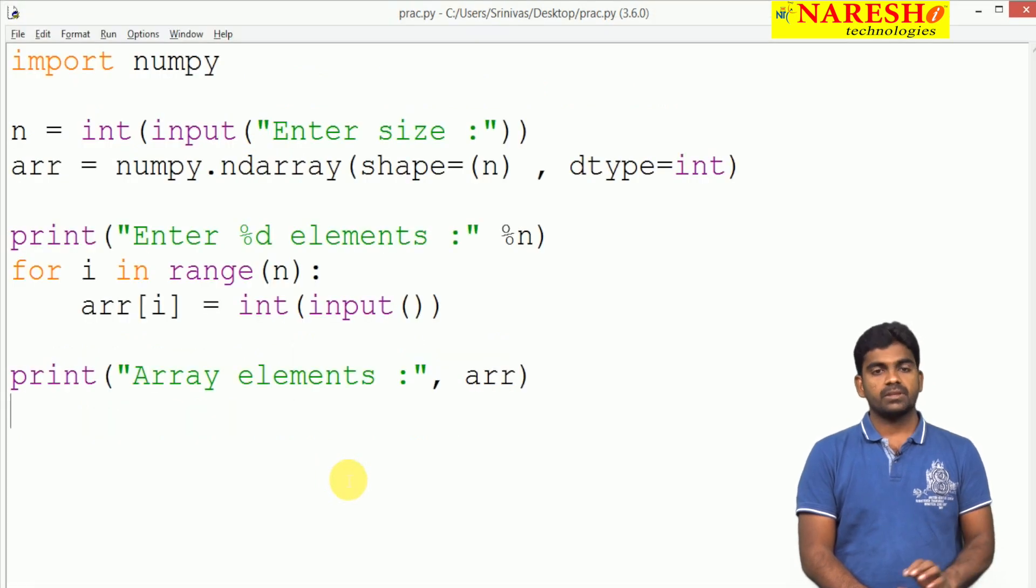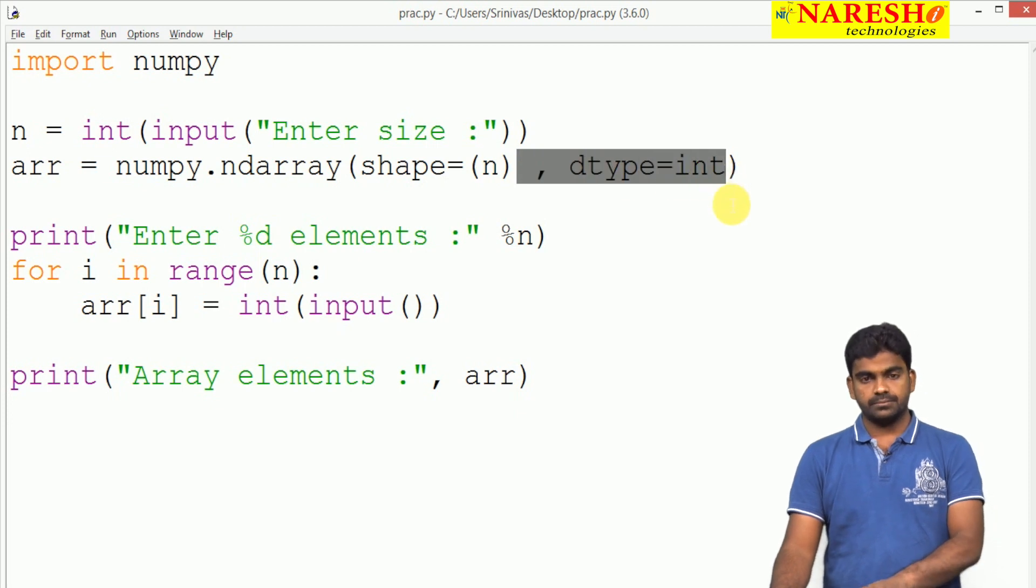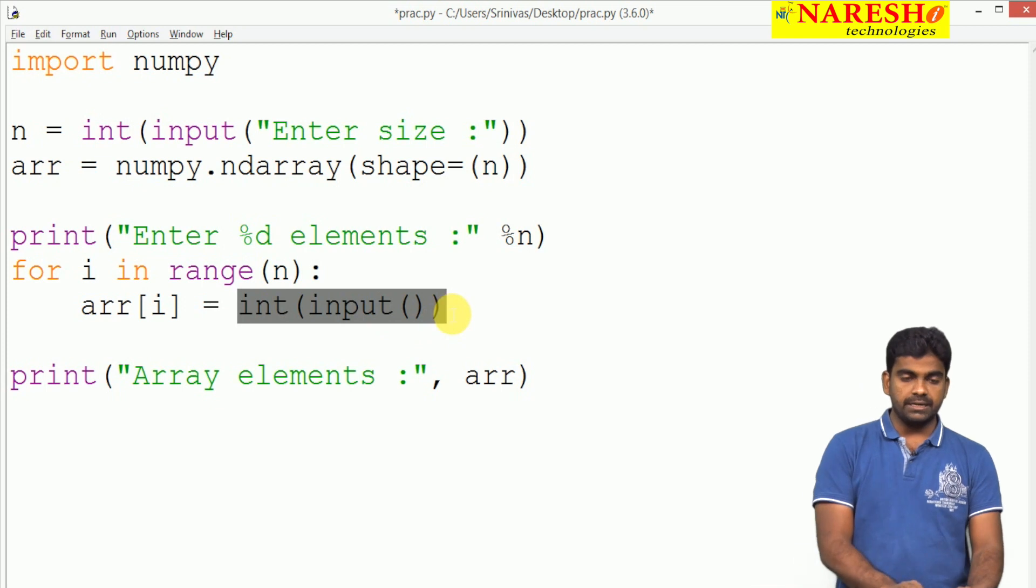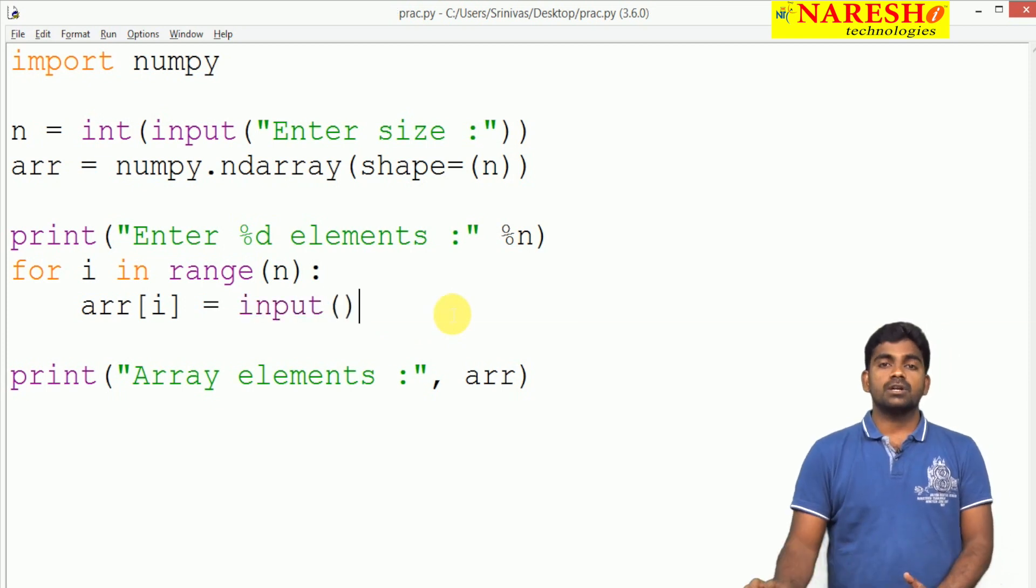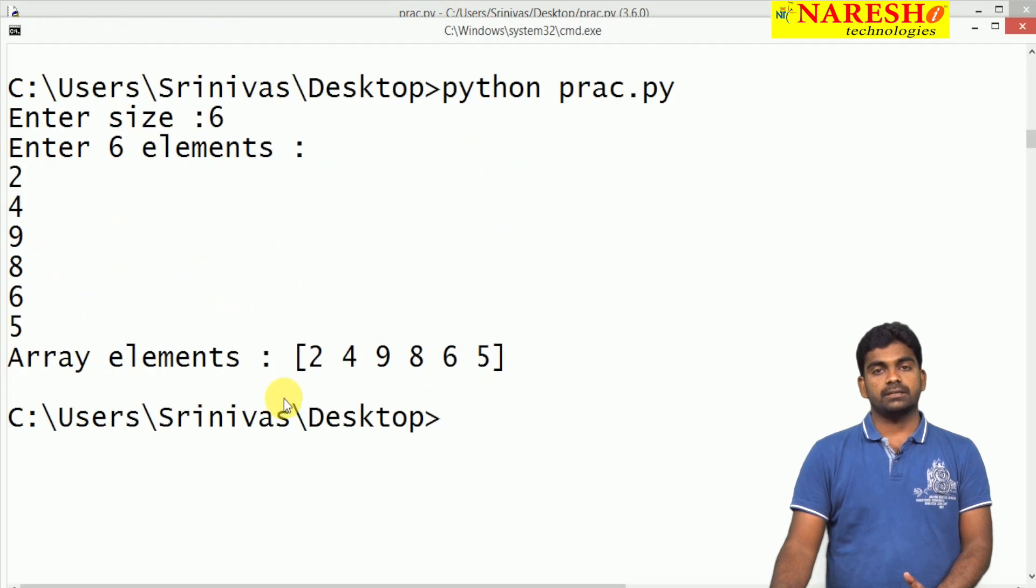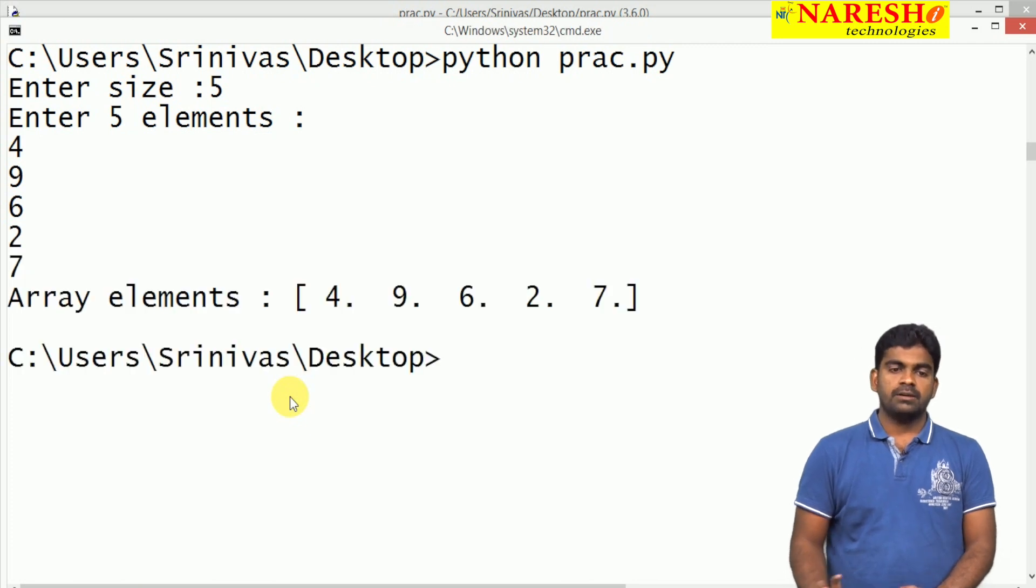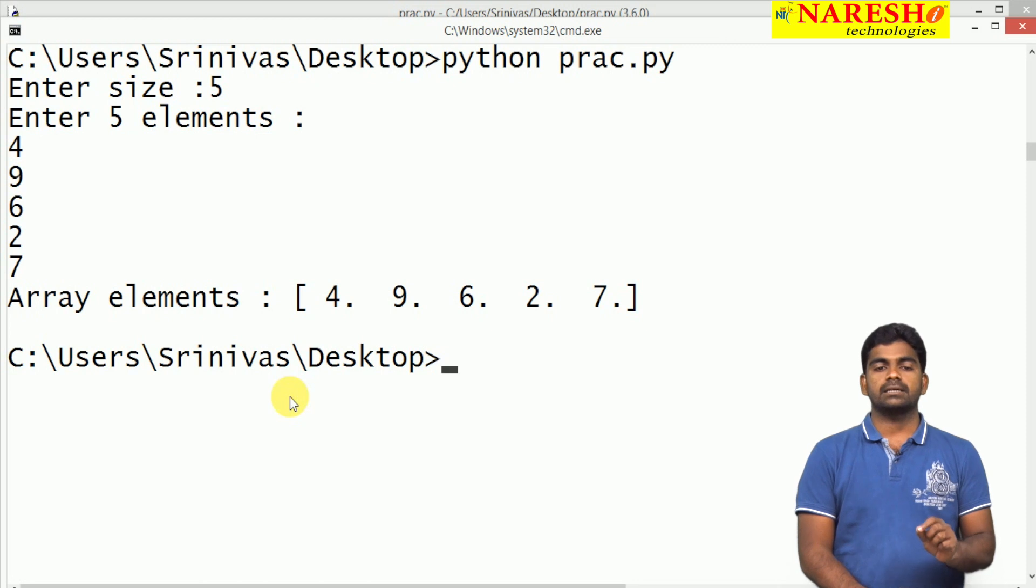Here, for example, if I'm not mentioning the data type, by default it is float type. See, I'm not converting to integer, I'm just writing input. Now when we execute, enter size 5, I'm giving 4, 9, 6, 2, 7 like this. When we display, look at this: 4.0, 9.0, 6.0 - by default it's float type.